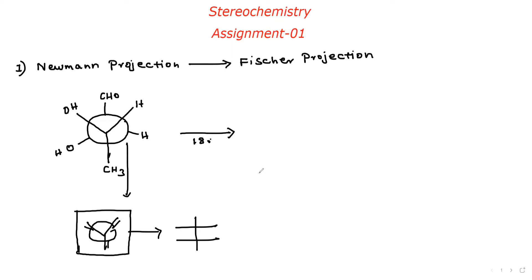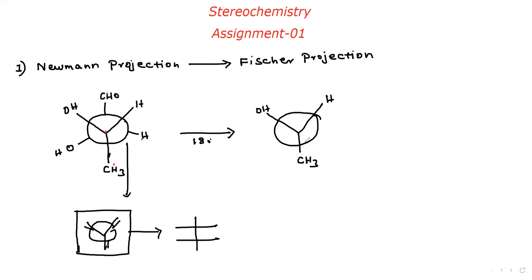I do 180° rotation. The front carbon remains the same. The back carbon: here CH3, here CH3, here hydrogen, here OH. Now this back carbon — I'm going to do a 180° rotation. What happens with 180°? Top becomes bottom, right becomes left, left becomes right. Right side H, left side H. This is the 180° rotation.